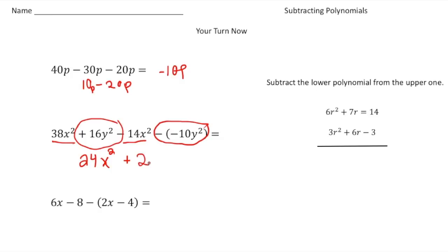For this one, we have 6x - 8 - (2x - 4). We're subtracting everything inside the parentheses, so we're subtracting 2x and also subtracting negative 4. That's 6x - 8 - 2x, and when we subtract the negative, it's like adding, so we add 4. So 6x minus 2x gives us 4x, and negative 8 plus 4 is negative 4.